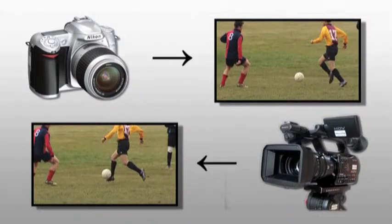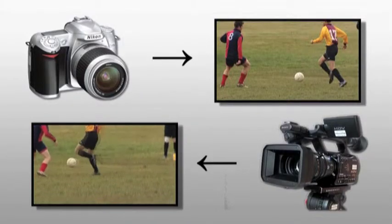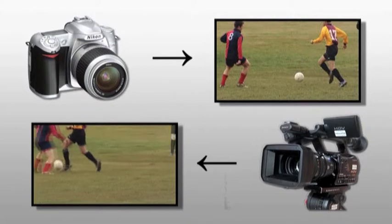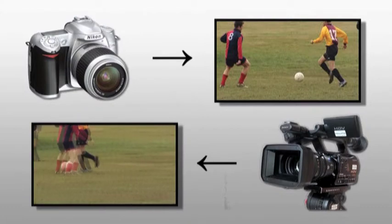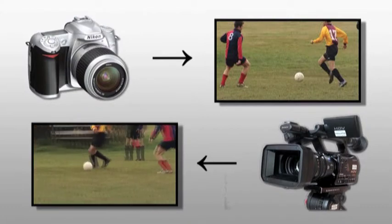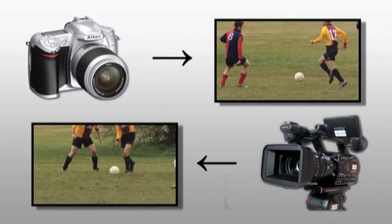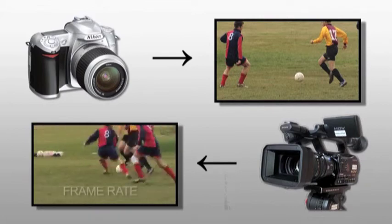What distinguishes the video camera from a stills camera is that it can record a stream of images at constant speed, creating the illusion of live action movement.